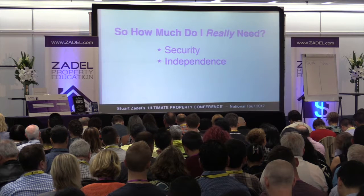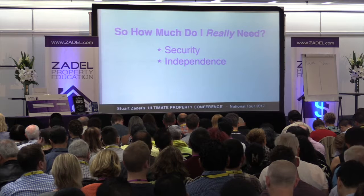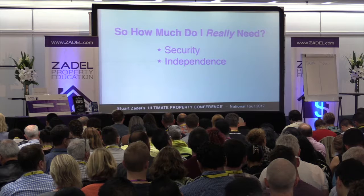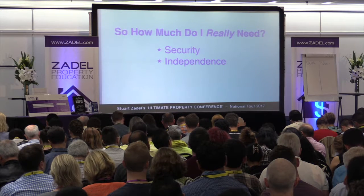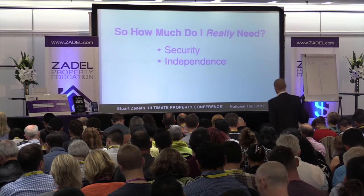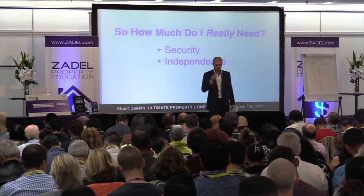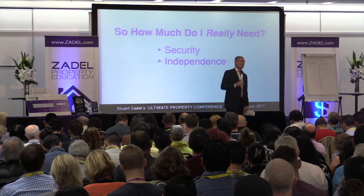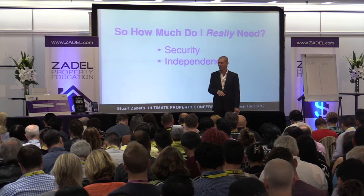How much money do you spend a year — 12 months? If you don't know, just take your monthly figure, times it by 10 to get roughly 10 months, then add a couple of extra months to get to 12. So roughly, how much do you spend a year — is it 30 grand, 50 grand, 100 grand? This is your yearly burn rate — what it costs you to live your current lifestyle.